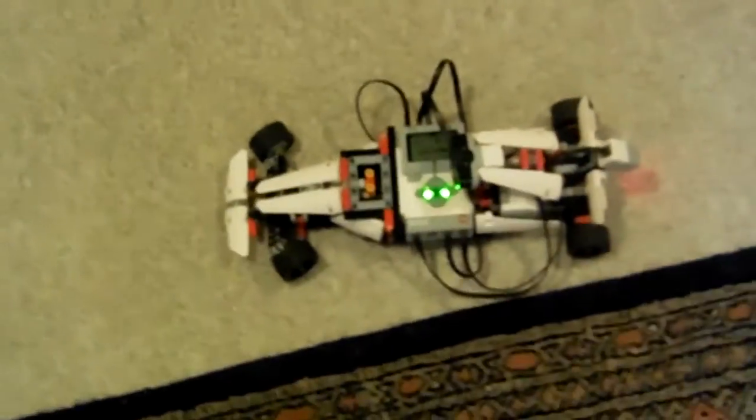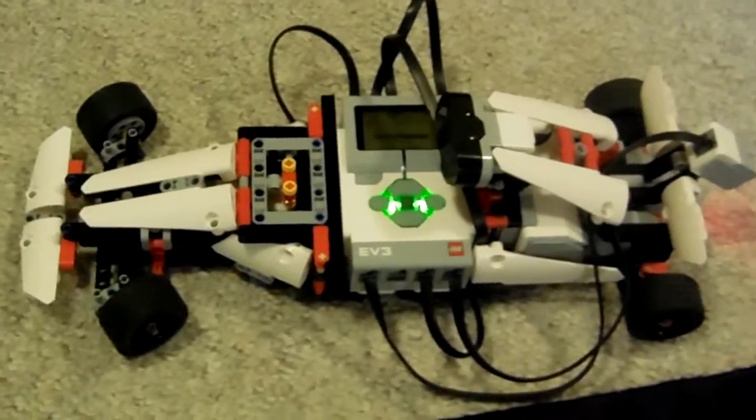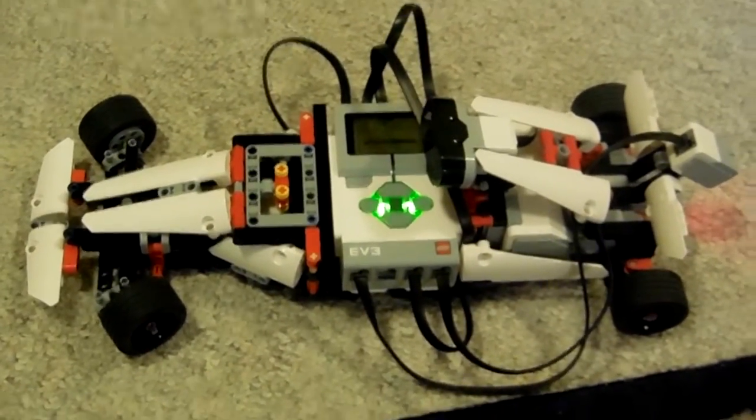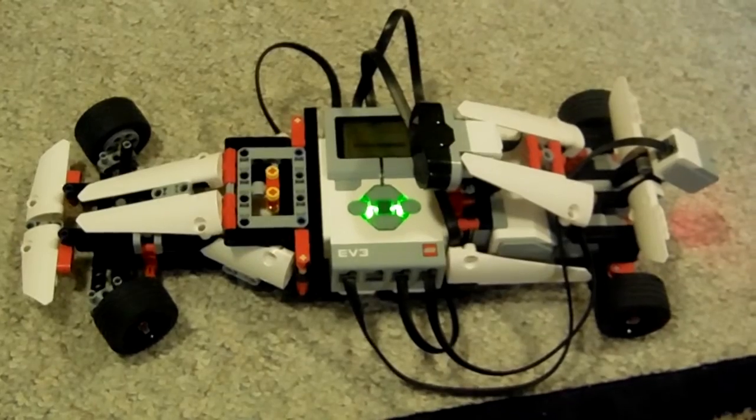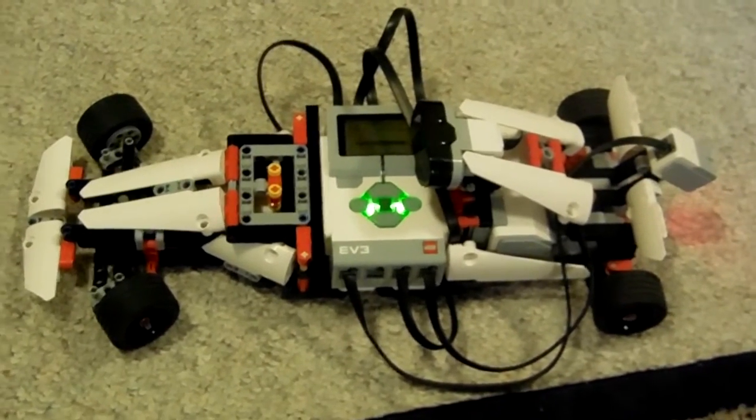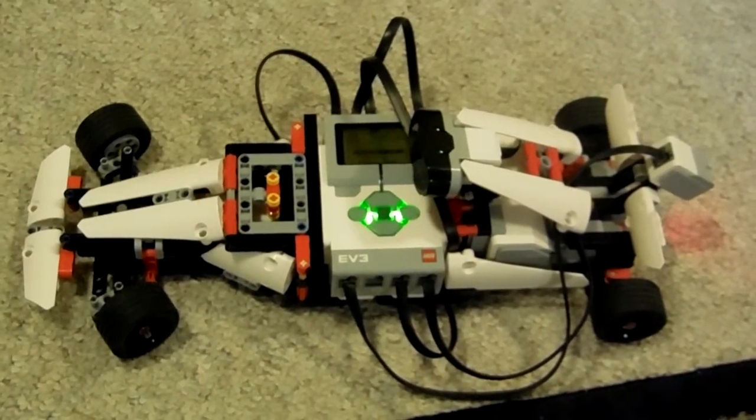This is the LEGO Mindstorm EV3 robot kit that's been put together in the configuration of a race car. This race car will drive around the room autonomously, or meaning by itself, and will detect objects with a sensor.